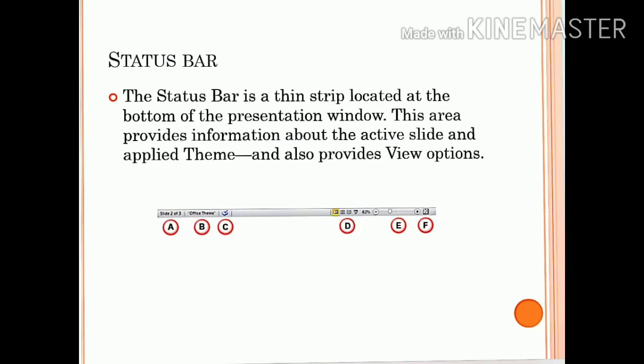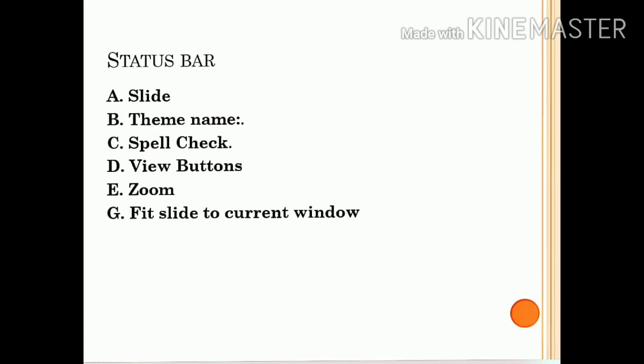This is the status bar in the presentation window. It is a horizontal bar. It shows the number of slides, the current slide number, theme name, the view buttons, zoom, and fit slide to current window. These are the items present in the status bar.